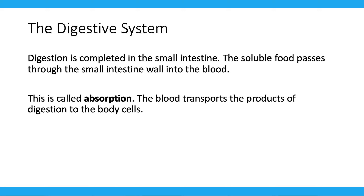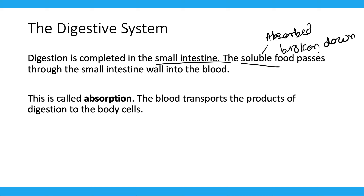So digestion is completed in the small intestine. The soluble food — the food which can be absorbed or broken down in water — passes through the small intestine wall into the blood, and this is called absorption. So the soluble food passes from the small intestine into the blood. The blood needs nutrients, so it gets them through the small intestine wall, and those nutrients are then carried to the rest of your body. The blood transports the products of digestion to the body cells.